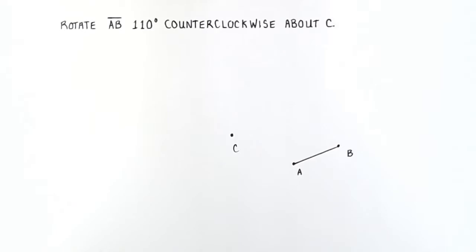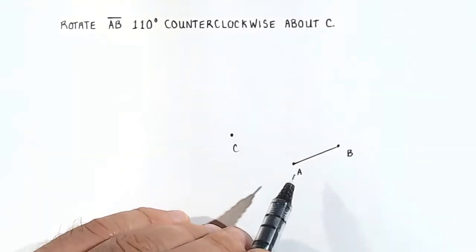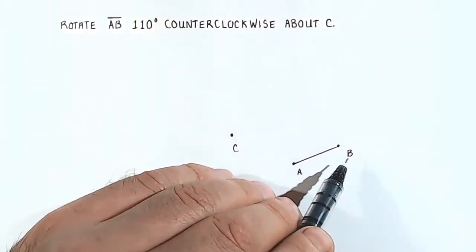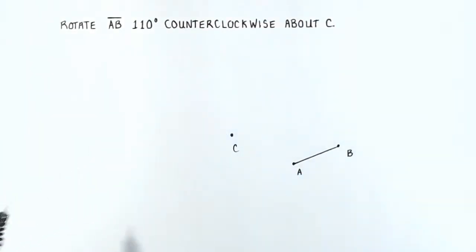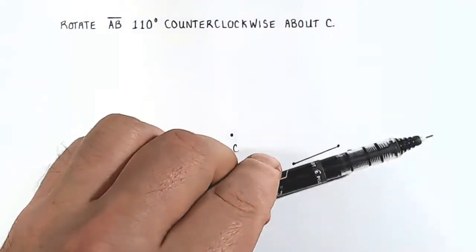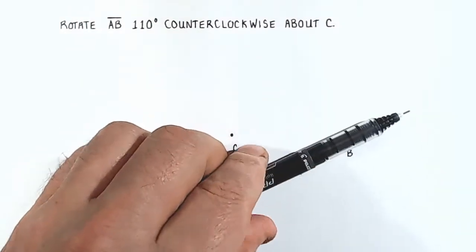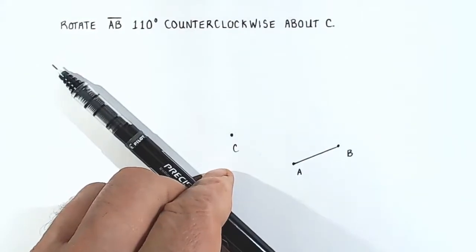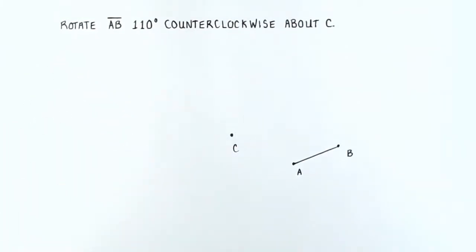We're going to do this in two steps. First, we'll rotate point A, then we'll rotate point B. For a counterclockwise rotation, that's going to move the segment in this direction over here.